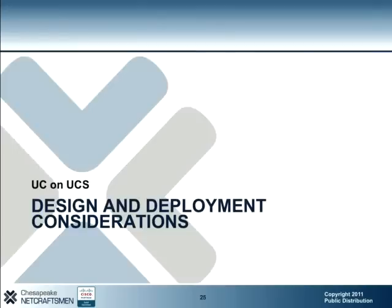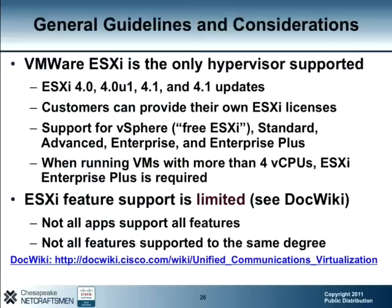Next we are going to review the design and deployment considerations for the UC on UCS solution. There are many considerations on what is and what is not supported, and Cisco has a very robust doc wiki repository on the topic. First, VMware ESXi is the only hypervisor that is supported. The versions supported are ESXi 4.0, 4.0 Update 1, 4.1, and 4.1 Updates. Cisco applications like Unity and Contact Center Enterprise started their virtual life supporting ESX, but Cisco is clearly moving away from this, since VMware itself is leaving ESX behind.